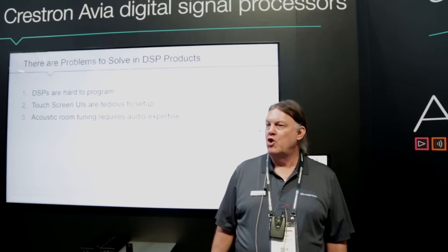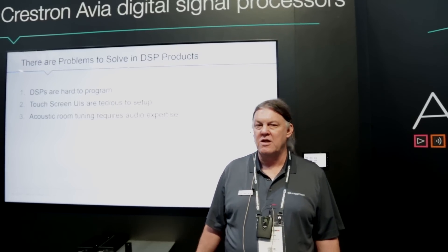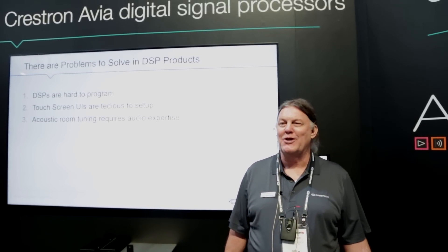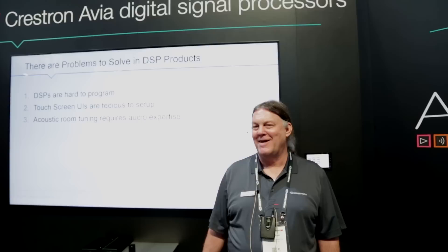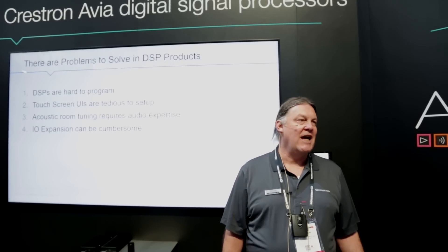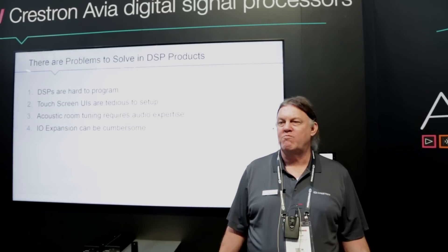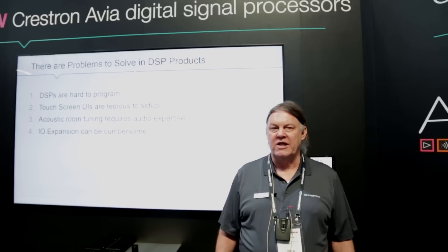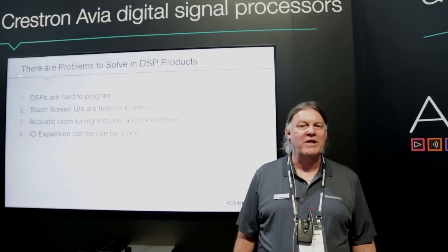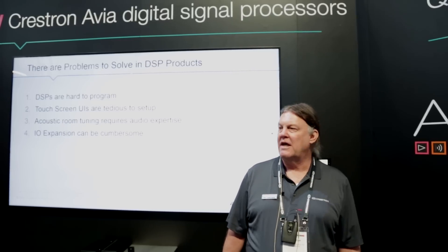We've also noticed that acoustic room tuning requires some audio expertise. Some people can overlook it altogether or perhaps get into a little more trouble than they ought. The fourth thing we looked at is IO expansion. We have a 12-in 8-out DSP as a standard configuration, and to increase IO count you add more boxes. We've got a method for doing that, as well as for SIFT, POTS, and VoIP expansion.